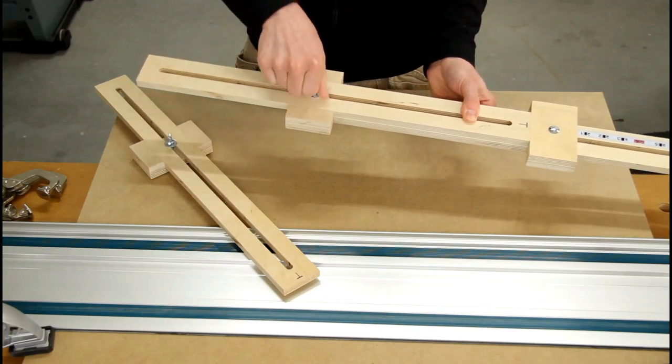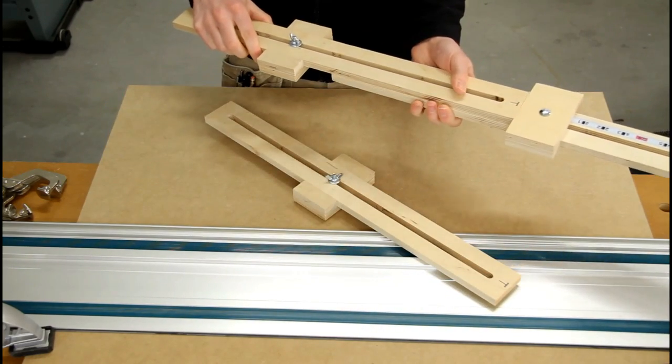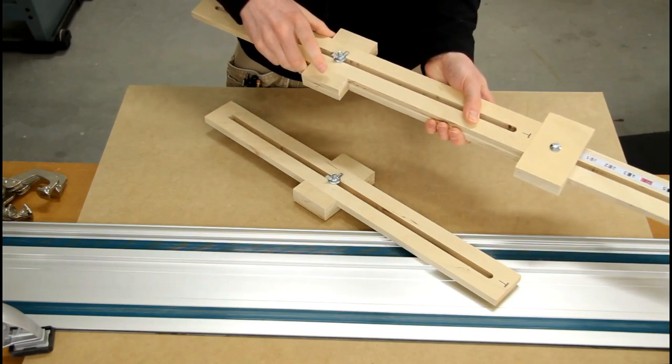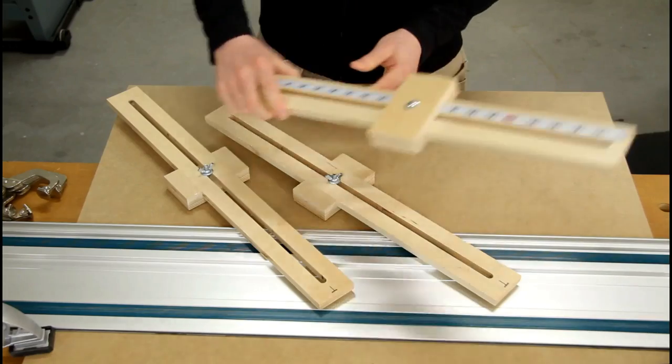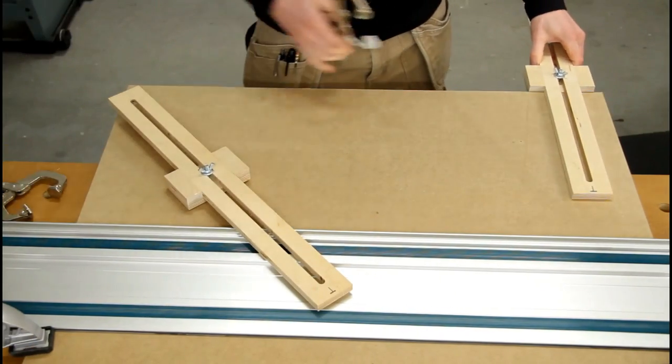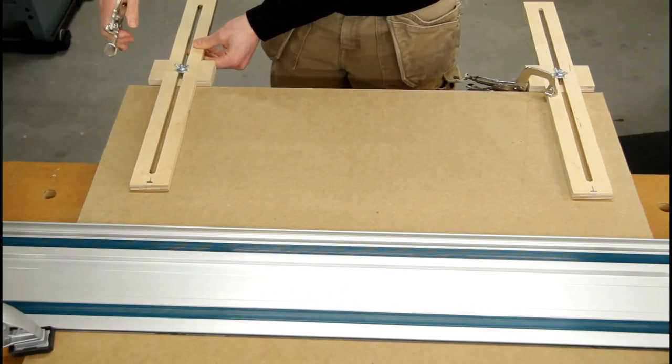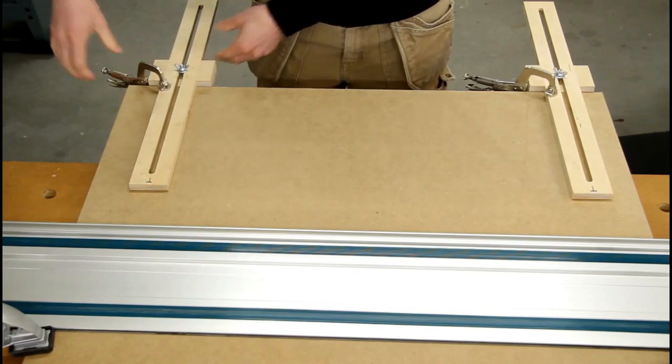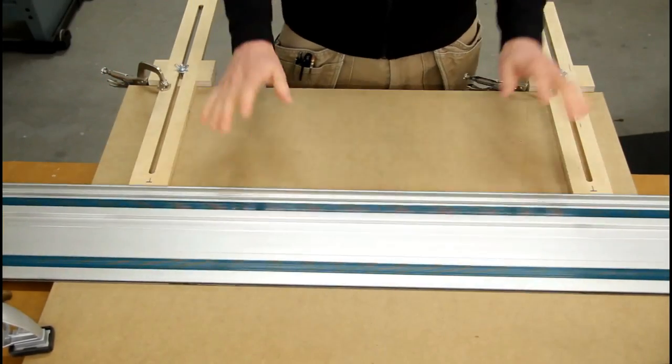Slide the stop block along, lock it down. Do that with each one, and then that's the end of the setting jig. So then I just take the parallel guides and clamp them down to the workpiece, and then take my track and butt it up to it, and it's good to go.